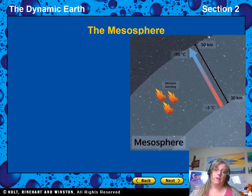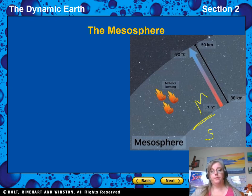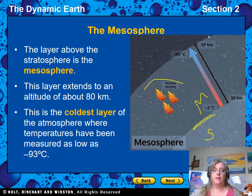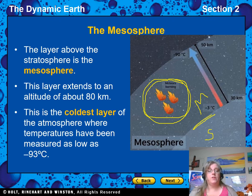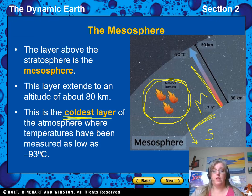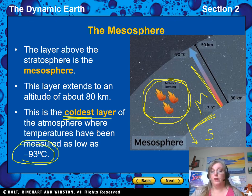The next layer up is the mesosphere. The main thing the mesosphere does for us is protect us from incoming meteors — meteorites burn up in the mesosphere before they hit us. It extends to about 80 kilometers and is the coldest of all the layers, as low as negative 93 degrees Celsius.